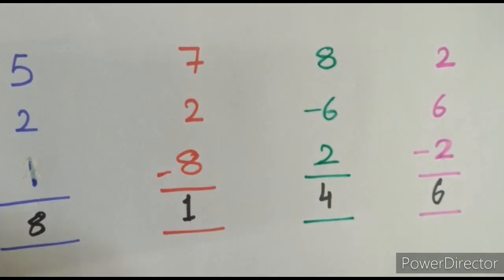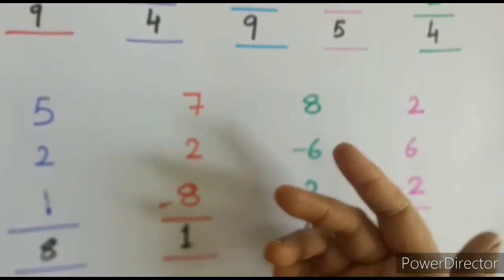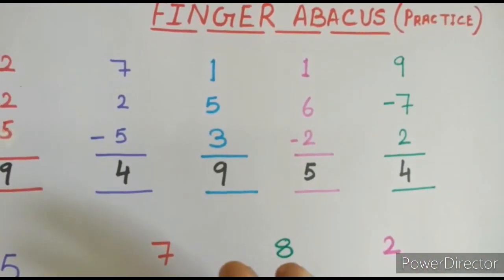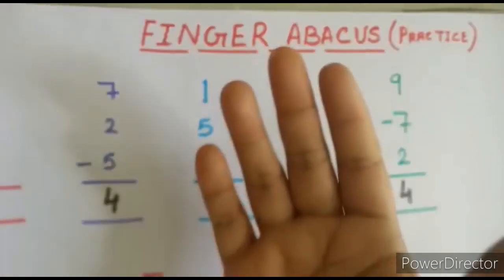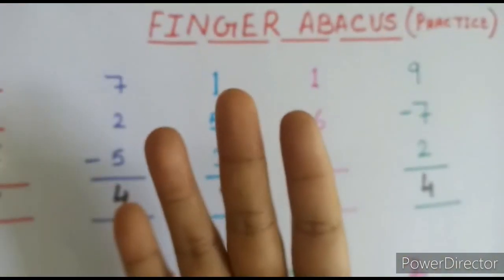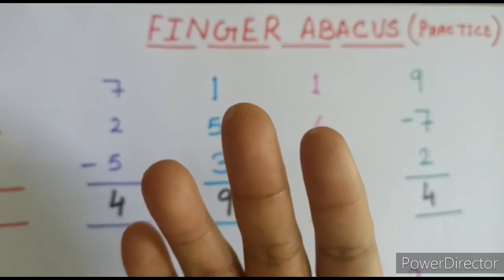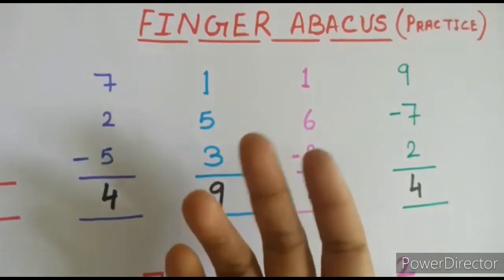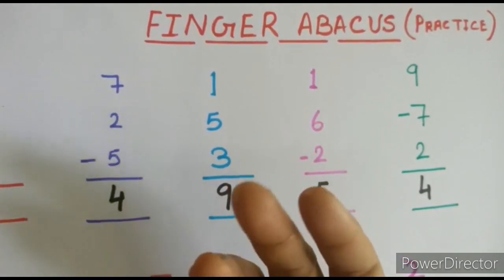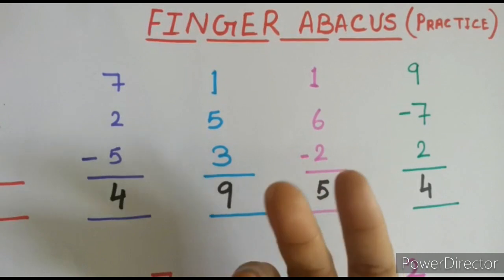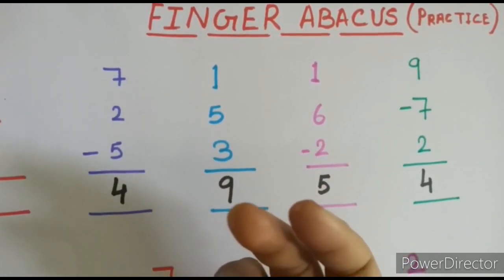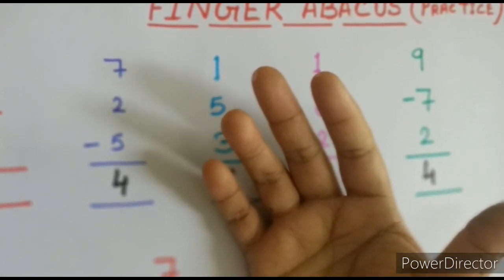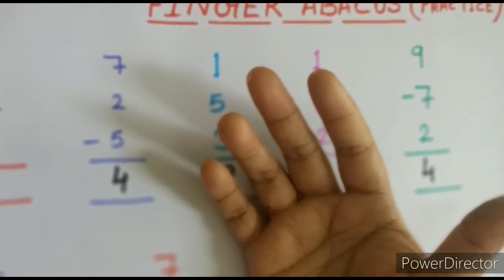I hope all of you understand how to add or subtract digits from 0 to 9 using your right hand fingers. You should practice at home by writing more numbers like this — if you practice many times it will not be hard for you. I hope all of you enjoy this class. Thank you.